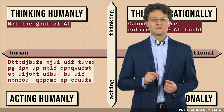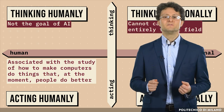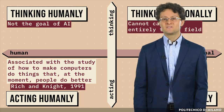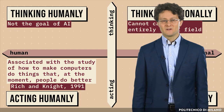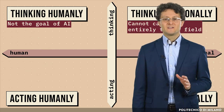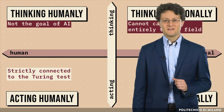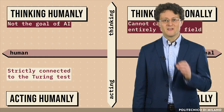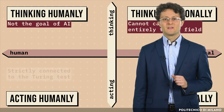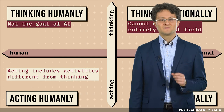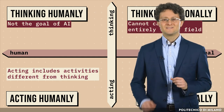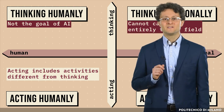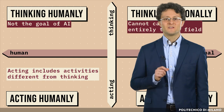Acting humanly is associated with the study of how to make computers do the things that, at the moment, people do better, as suggested by Rich and Knight in 1991. Notice that acting humanly is strictly connected to the Turing test, and therefore to exhibiting a behavior as close as possible to the behavior of a human being. Notice also that acting includes activities different from thinking — we are interested in observing the behavior without the need to understand how such behavior has been chosen.